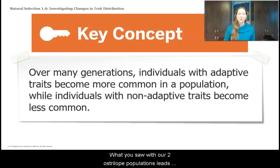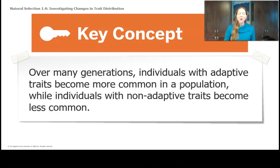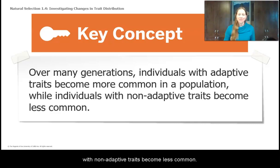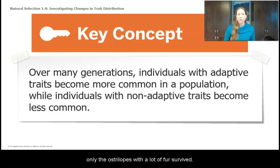What you saw with our two ostrilope populations leads us to two more key concepts. Go ahead and record these wherever you're keeping track of your natural selection key concepts. Over many generations, individuals with adaptive traits become more common in a population, while individuals with non-adaptive traits become less common. You saw this in population A, where there was a lot of variation at the beginning, but by the end, only the ostrilopes with a lot of fur survived.